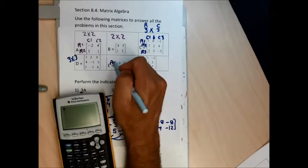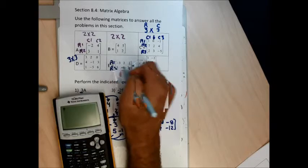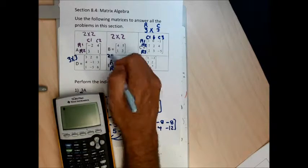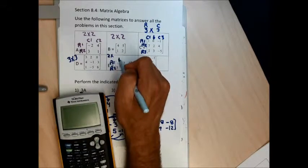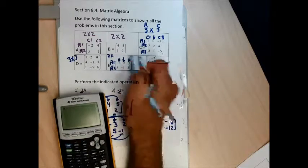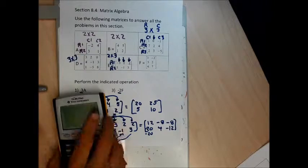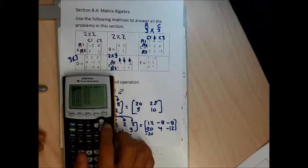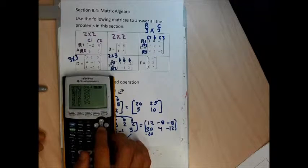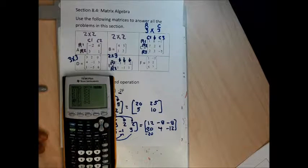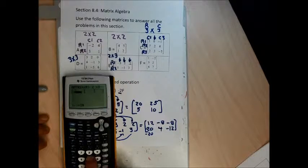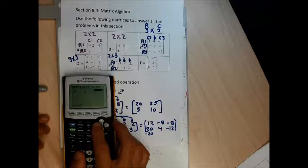The next matrix, matrix E, has two rows and three columns — so it's a 2 by 3 matrix. I enter it by going second, matrix, edit in the right-hand column, E in the left-hand column. Hit enter. Type 2, enter, 3, enter. Then enter all the numbers that are there. Once you get the numbers in, double check them to make sure they're right, then second and quit.